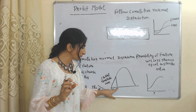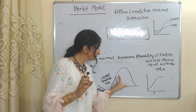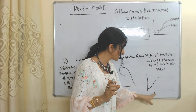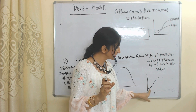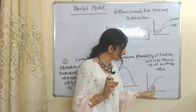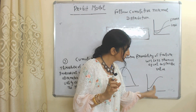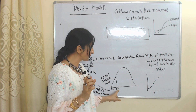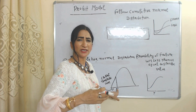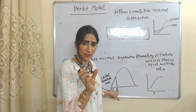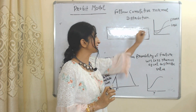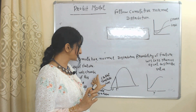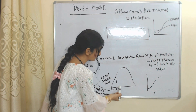The probit model is based on this critical threshold level. If utility increases beyond the threshold point E, then the probability of choosing an alternative increases at a very fast rate. In the diagram, before point Y the probability of choosing an alternative is increasing at a very slow rate, but after point Y it increases very fast because that is the critical threshold level. This is why the probit model is steeper compared to the logit model.